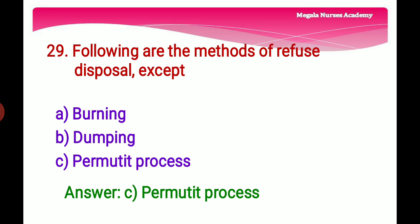Twenty-ninth question: Following are the methods of refuse disposal, except — Option A: Burning, a disposal method for waste. Option B: Dumping, also called landfilling, an old way of waste disposal. Option C: Permutit process, a process of removing permanent hardness of water using natural or artificial zeolite. The right answer is Option C, Permutit process, as it is not a method of refuse disposal.